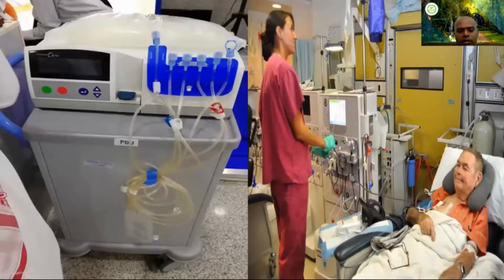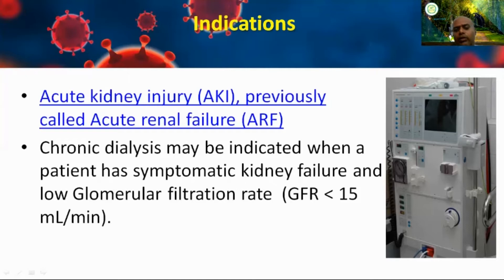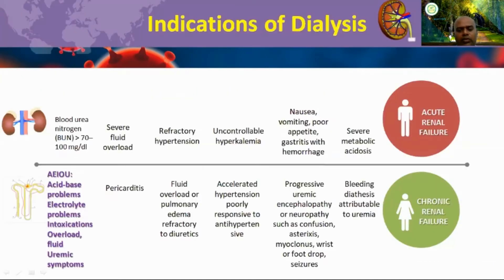For acute kidney injury — previously called acute renal failure — and for chronic dialysis, the patient has symptoms of kidney failure. The glomerular filtration rate, or GFR, is 15 ml per minute for dialysis indication. Normally, as per the Kidney Foundation of India, GFR is 90 to 130 ml per minute, with 120 ml per minute being the normal value. When GFR falls low, the patient will go for chronic dialysis.